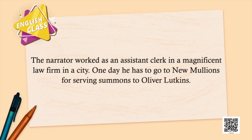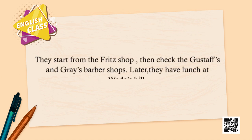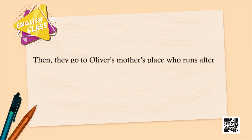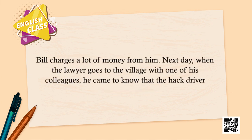The narrator worked as an assistant clerk in a magnificent law firm in a city. One day he has to go to New Mullions for serving summons to Oliver Lutkins. When he reaches there he sees Bill, a hack driver. They both strike a deal and Bill takes him to various places in the city to search for Oliver. They start from Fritz's shop, then check Gustav's and Grace's barber shops. Later they have lunch at Wade's hill. Then they go to Oliver's mother's place, who runs after them with an iron rod. But after a long search they could not find Lutkins, and the lawyer returns without serving summons. Bill charges a lot of money from him.